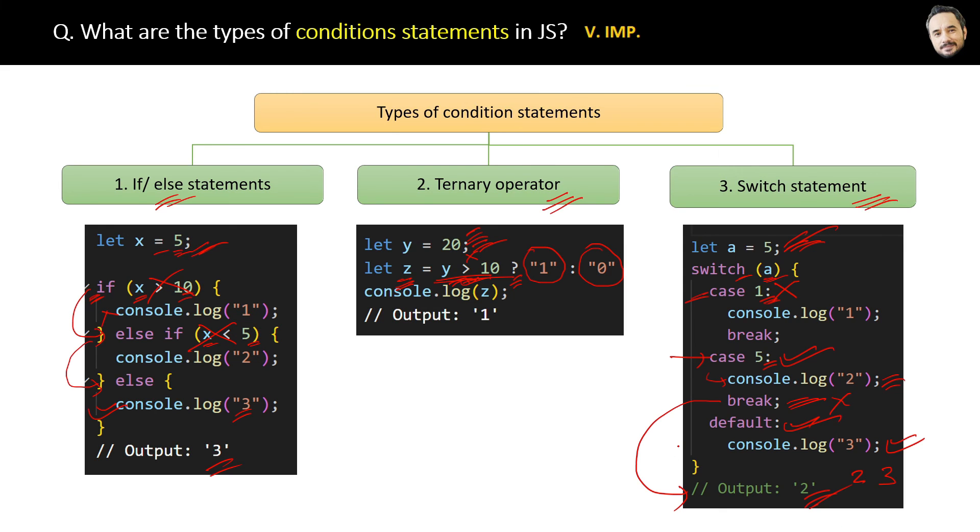So that's it. And yes, here the last default will be executed when none of the above case statements are true or fulfilled. That is the difference between these three types of conditional statements in JavaScript.